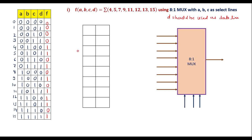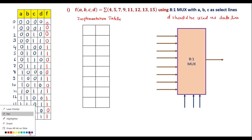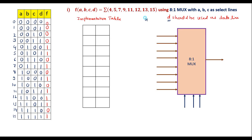With the help of this truth table, we can write the implementation table. As stated, we have to use D as the data line. D's value may be 0 or 1. If D value is 0, we consider it as D̄. If D value is 1, we take it as D. So one column will be for D̄ where D=0, and another column for D where D=1. Along with the rows, we write the inputs A, B, C as select lines.